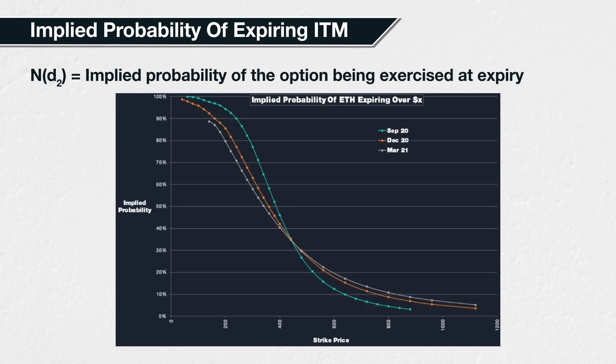If you think about your own view on the market in a probabilistic manner, you could compare your view to that of the current option prices using these values for N(d2). If you managed to find a large imbalance between your view and the market's view, you may have found an opportunity to make a nice profit if your view turns out to be correct. For example, if you thought there was more like a 20% chance that Ethereum will be above $650 by the September expiry, then the September calls may be offering you some great value buys at the moment.